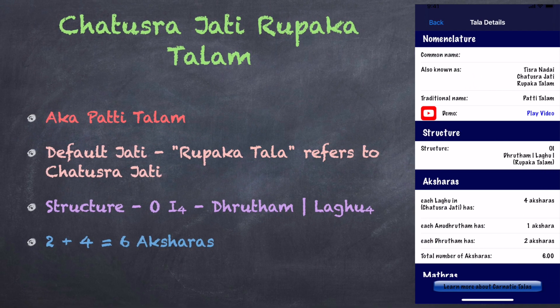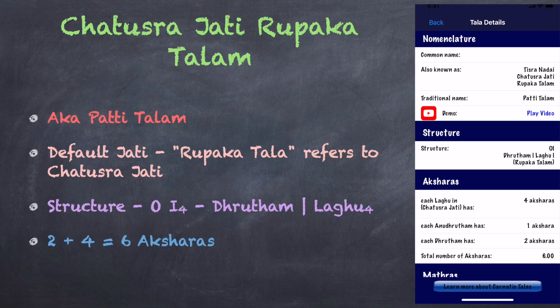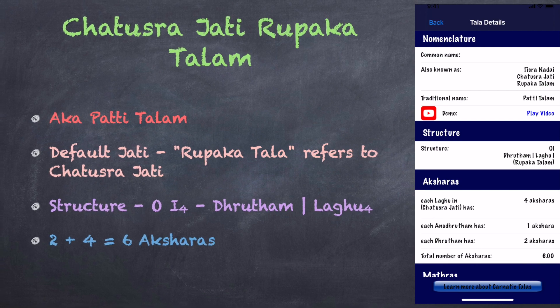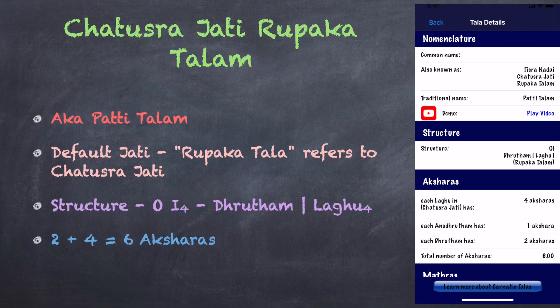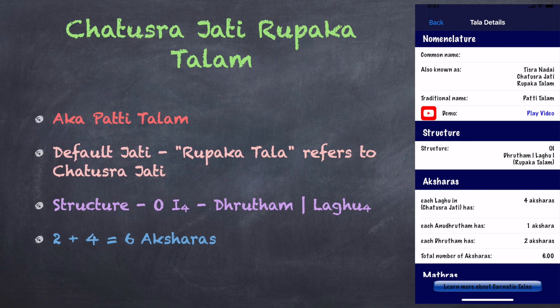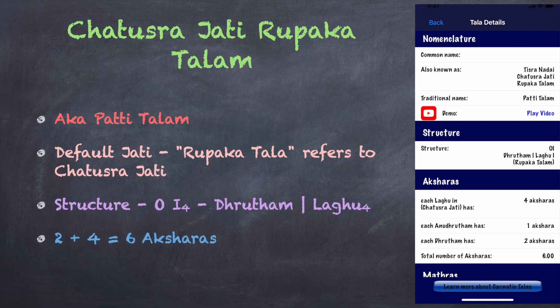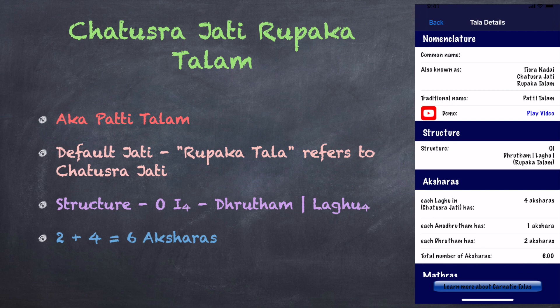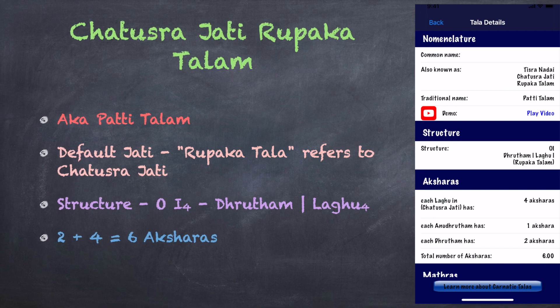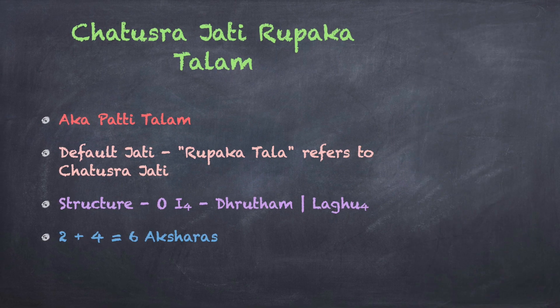A Rupaka Talam consists of a Dhrutam followed by a Lagu. In Chattushra Jati, the Lagu has four Aksharas. Therefore, this talam has a total of six Aksharas, split into two groups of two plus four. Chattushra Jati Rupaka Talam.